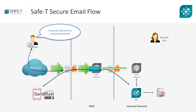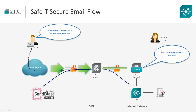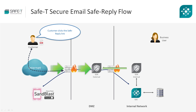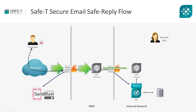The recipient clicks the link to download the attachment. The request arrives to SafetyHDS via the SafetyHDS reverse access. The user is then authenticated and the attachment is downloaded to the recipient. Next, the recipient clicks the safe reply link. The request arrives to SafetyHDS via the SafetyHDS reverse access, and the user is authenticated and the safe reply dialog is opened.